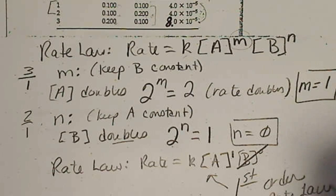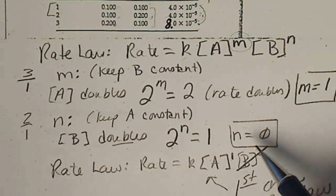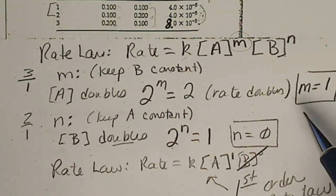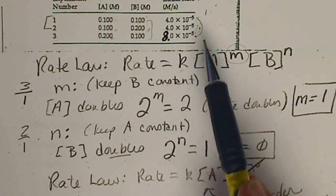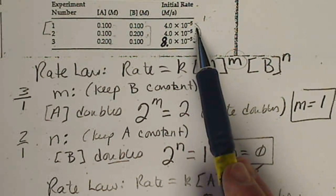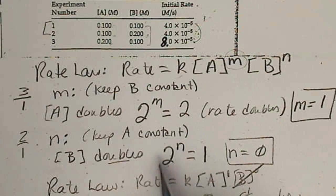We cannot tell by looking at the data. We have to solve for the powers first, and then once we solve for the powers, then we're going to pick one experiment, plug in this value for the rate. So our rate is here. We'll plug that in.